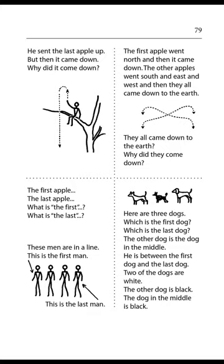Page 79. These men are in a line. This is the first man. This is the last man. Here are three dogs. Which is the first dog? Which is the last dog? The other dog is the dog in the middle. He is between the first dog and the last dog. Two of the dogs are white. The other dog is black. The dog in the middle is black.